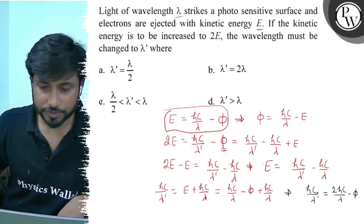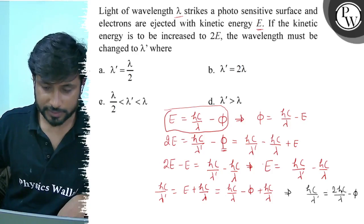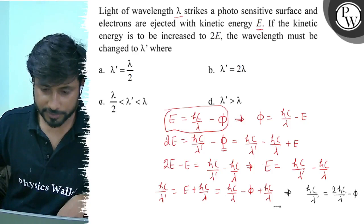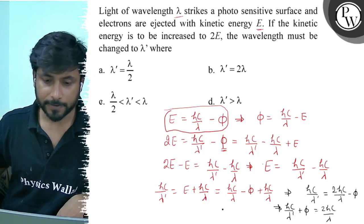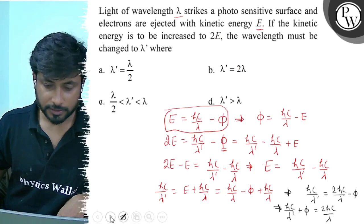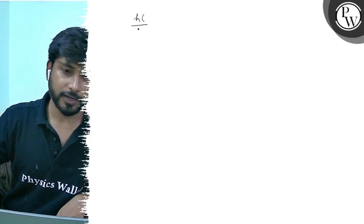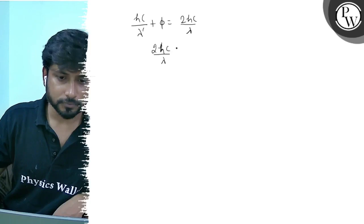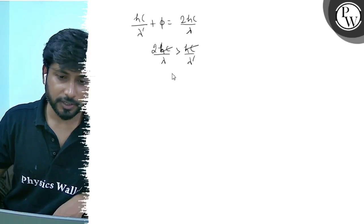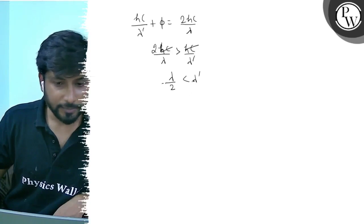So we have hc by lambda minus φ equals e, and hc by lambda dash equals 2hc by lambda minus φ. From this we can see that 2hc by lambda is greater than hc by lambda dash. Since hc cancels, we get that lambda by 2 is less than lambda dash.